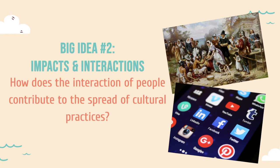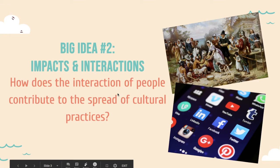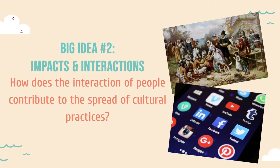Big idea number two: how does the interaction of people contribute to the spread of cultural practices? There's this big concept we've discussed before that's going to be an even bigger topic in Unit 3 — diffusion. When we talk about the interaction of people and the spread of cultural practices, that is diffusion 101. We're going to talk a lot about that. It takes on different roles, but that's how culture spreads, how customs spread — through diffusion.